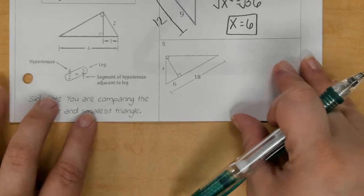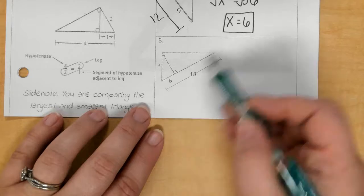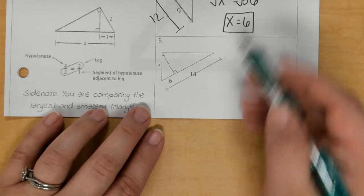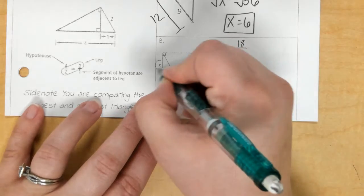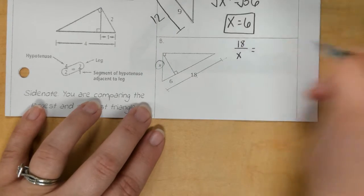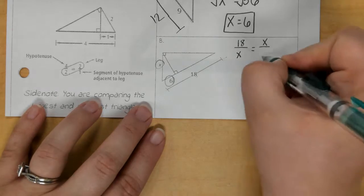Alright, so for this one, we're looking at the hypotenuse of the big triangle, which is 18. So, we go 18 over the leg, x. And then x again, over the small leg, 6.